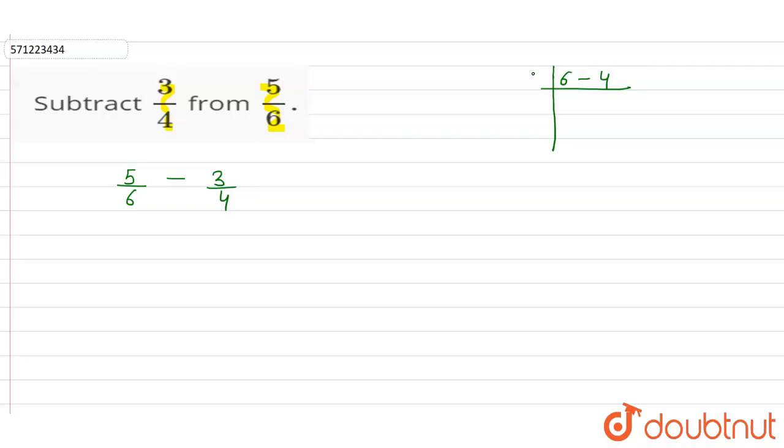So the LCM of 6 and 4 will be equal to 2 into 3 is 6, 2 into 2 is 4, then 2 into 1 is 2, 3 as it is, 3 into 1 is 3, 1. The LCM of